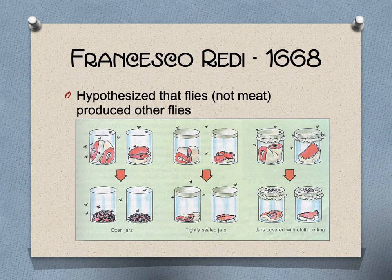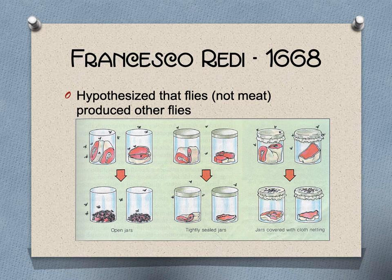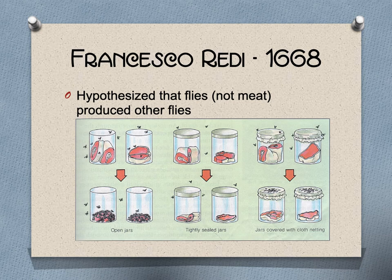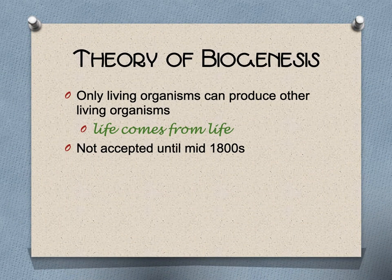Francesco Redi in 1668 provided the definitive explanation: flies don't come from rotting meat — they're attracted to the smell, lay their eggs, and you get maggots, which metamorphose into flies. He took meat, put it into jars: one set left open got maggots, one set sealed had no flies inside. A jar covered with cheesecloth allowed flies to smell the meat but not land on it, so they laid their eggs on top of the cheesecloth, not on the meat — a strong indicator that life does not come from non-life.